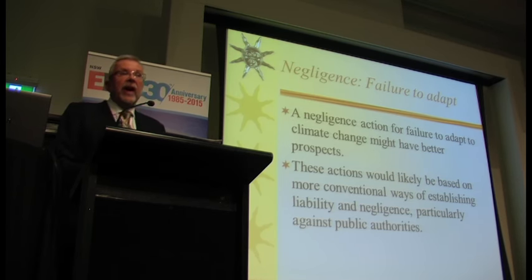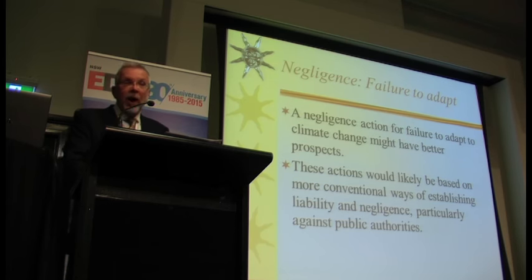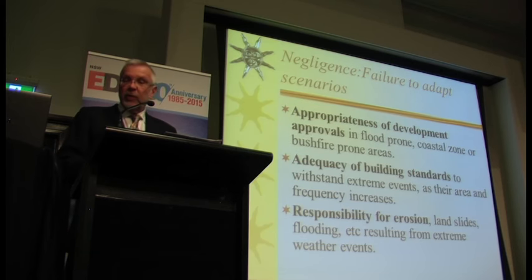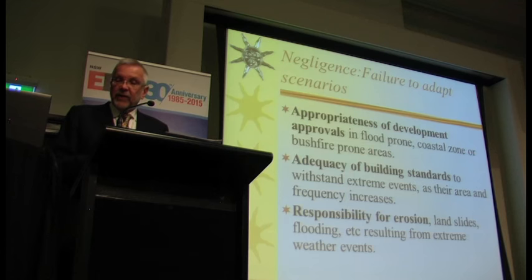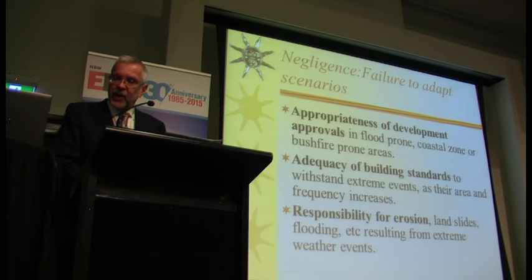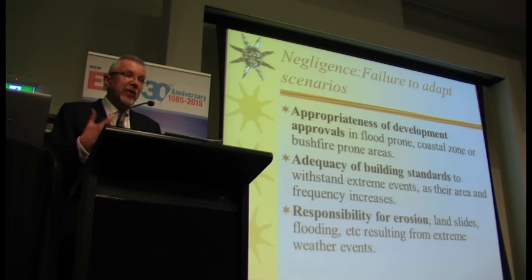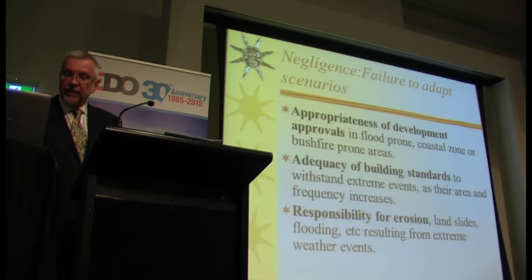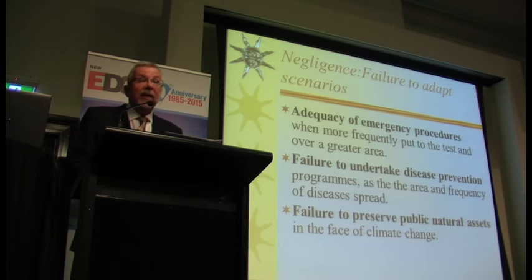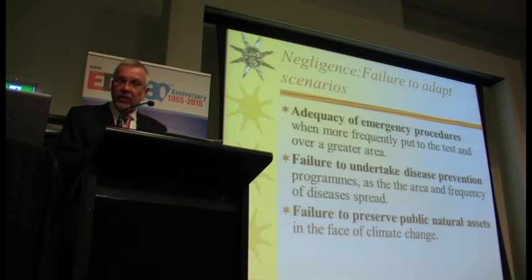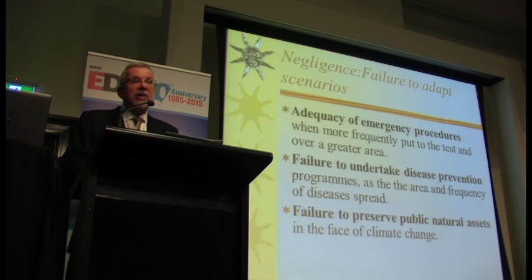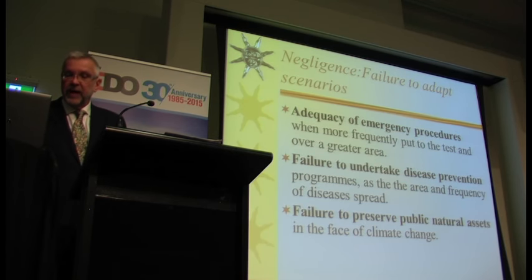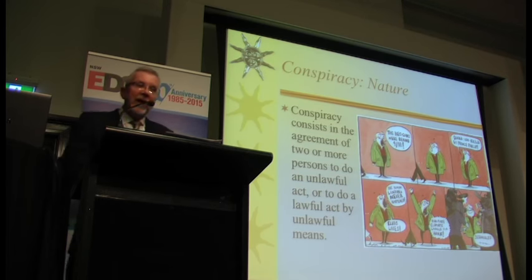But in relation to failure to adapt, I think we might see more success because courts would find these more familiar. It could be the grant of a development approval in a flood-prone coastal zone, or a bushfire zone more severely affected under climate change. It could be the adequacy of building standards for cyclones, tornadoes, or flooding. It could be responsibility for erosion or landslides, inadequate emergency procedures — as we saw with Hurricane Katrina in New Orleans — or failure to take action for disease prevention. Dengue fever, Ross River fever, and malaria are extending their range by reason of climate change.